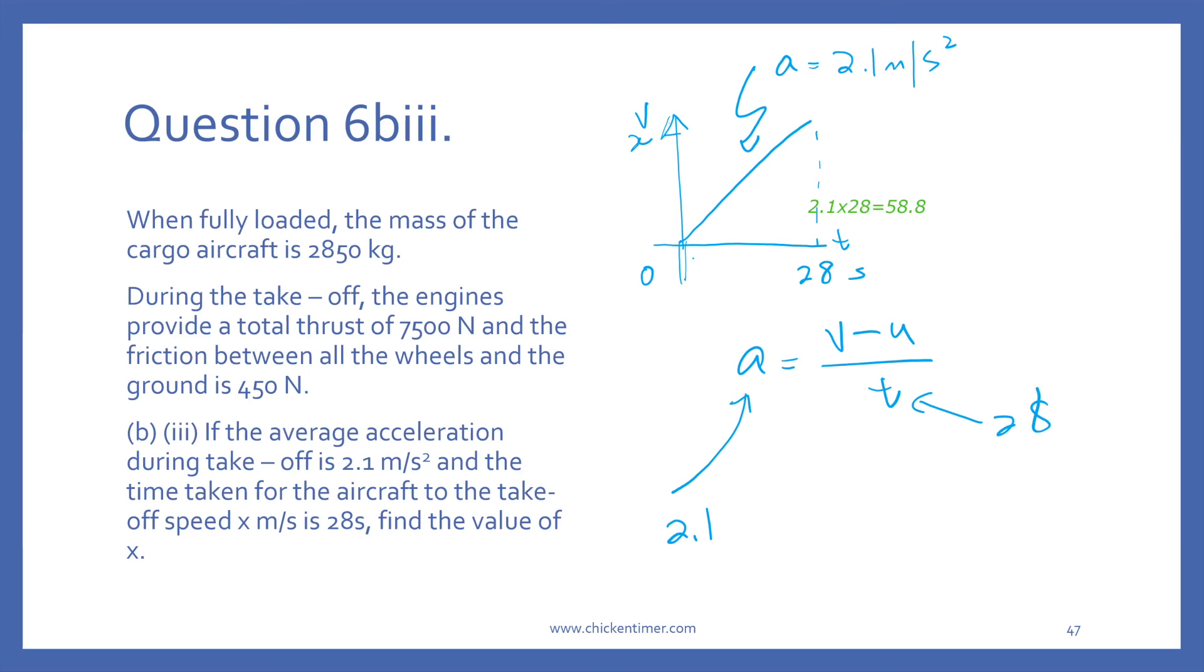Initial speed, I draw it as zero. Why is it zero? Because it hasn't taken off. It wasn't moving, so it's zero. V is X. We get the working as X minus 0 over 28. So X eventually becomes 28 times 2.1, which is the same answer.